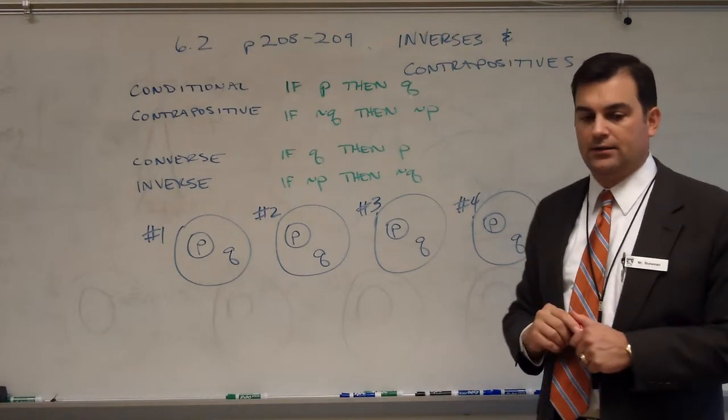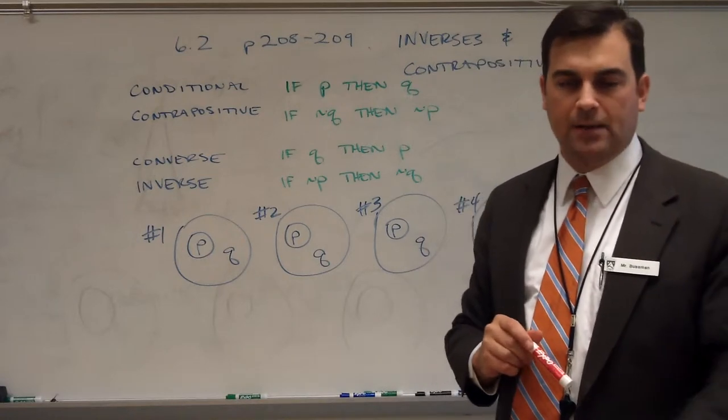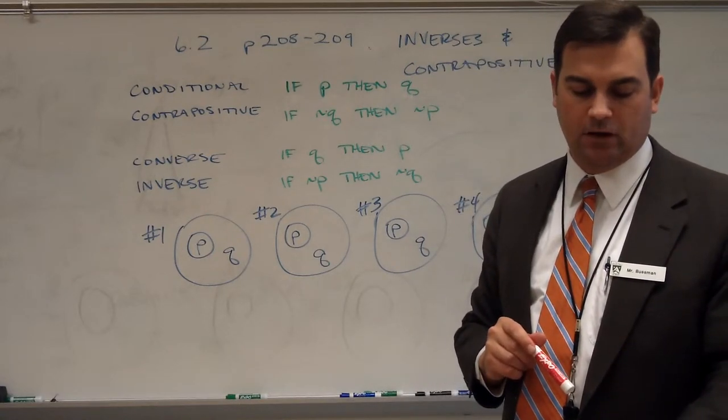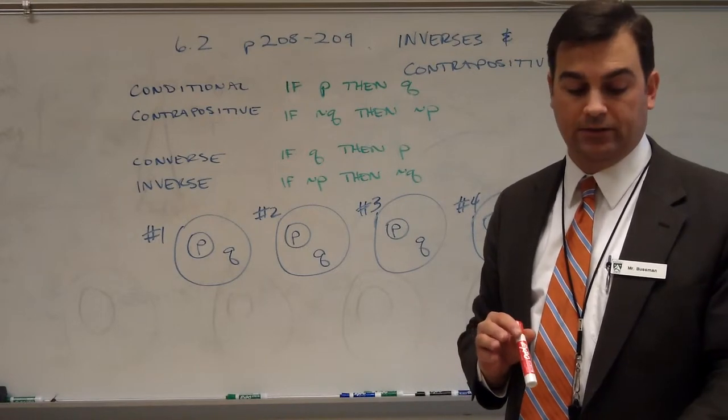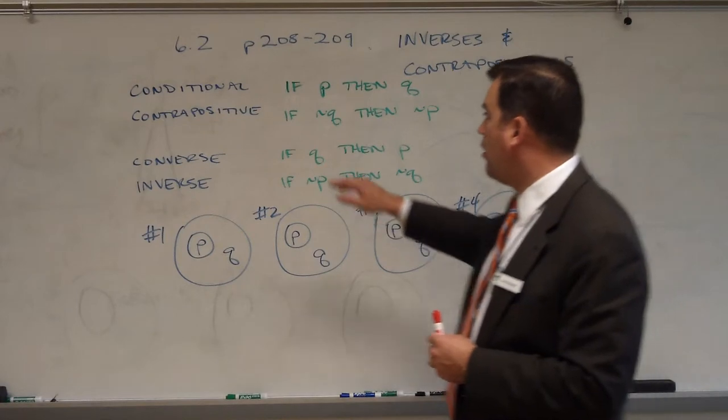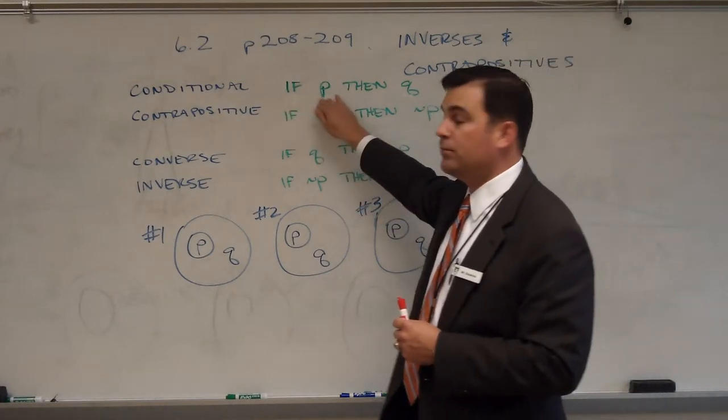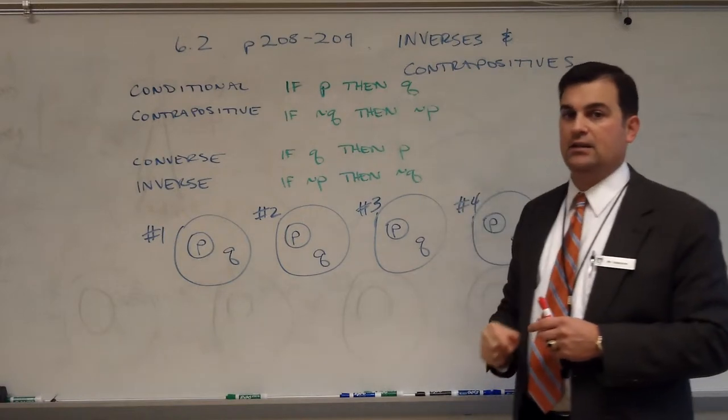So how do we use this in practice? If you take a look on page 209, you'll see that the example that's given in the textbook is the following example. All runners are athletes. And you could structure that as a conditional to say, if a person is a runner, then that person is an athlete.